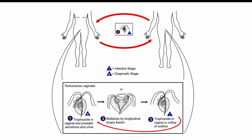These organisms multiply by what we call longitudinal binary fission, where the organism is split down the middle — one organism into two. They can then spread from these secretions to other sexual partners through sexual contact.